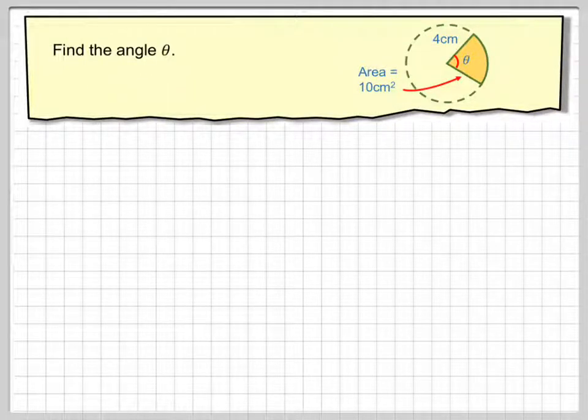Find the angle theta. What we've got here is a sector and we know its area is 10 centimetres squared and its radius is 4. And we've got to find what this angle makes here at the centre of this sector.